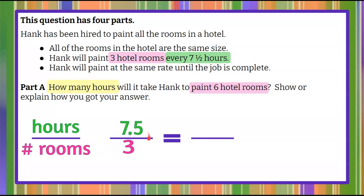Seven and a half hours to paint three rooms is our given rate. In this problem we've been asked how many hours — that's unknown, h — and we know he's going to paint six hotel rooms. Because all rooms are the same size and he paints at the same rate, these ratios are equivalent, forming a proportion.